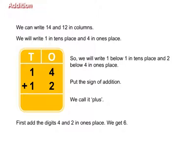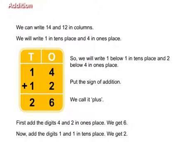First, add the digits four and two in ones place. We get six. Now, add the digits one and one in tens place. We get two. So, there are total twenty-six frogs sitting on the rock.